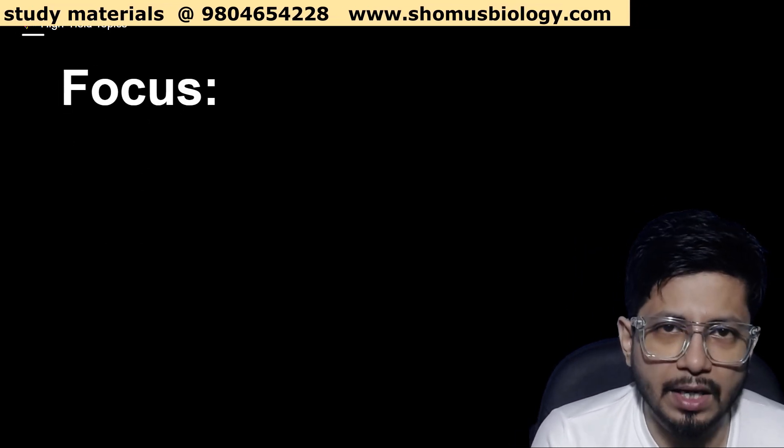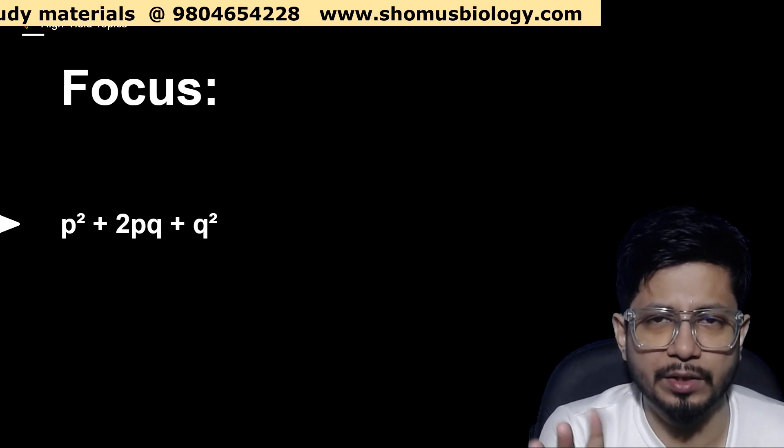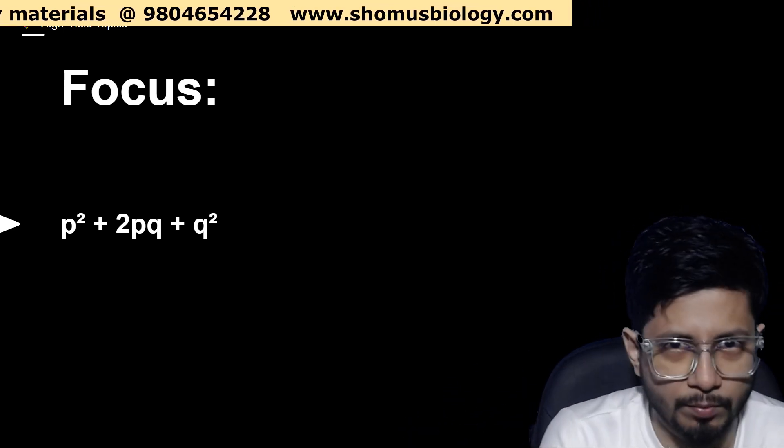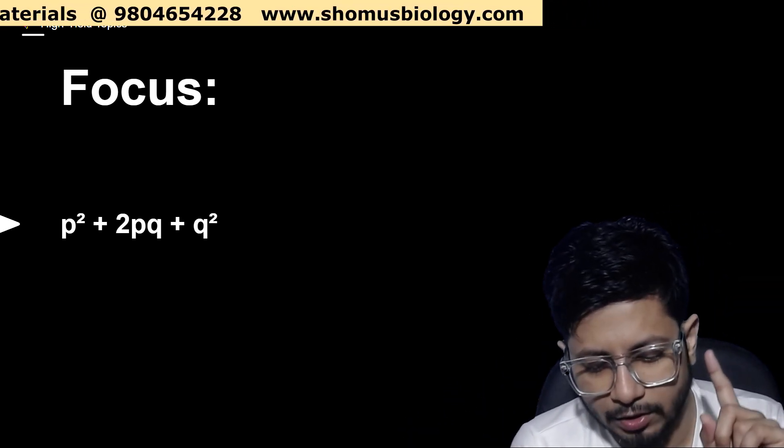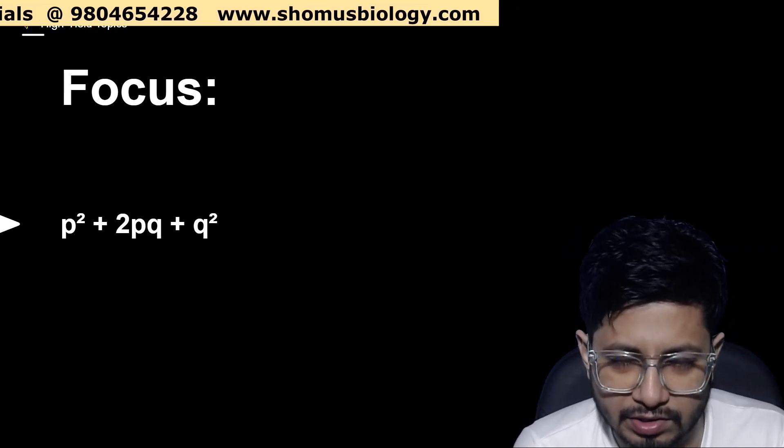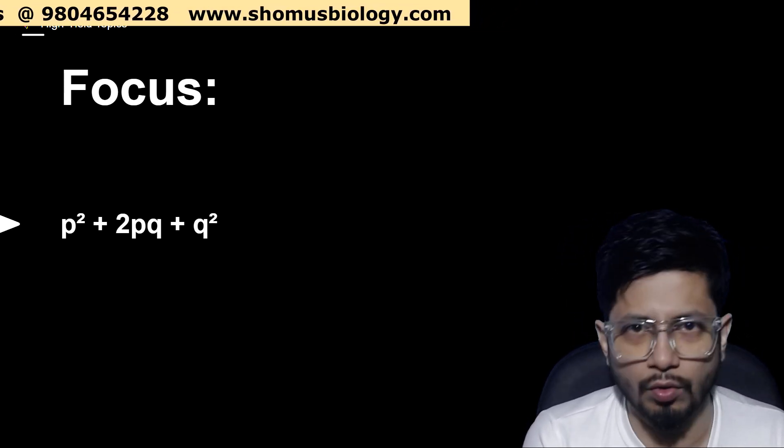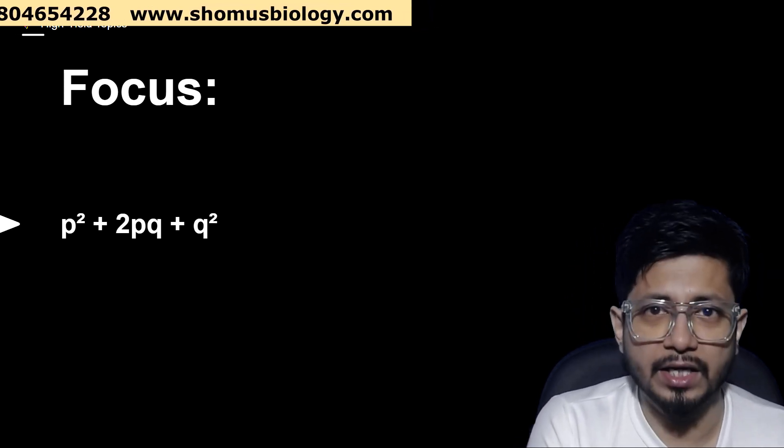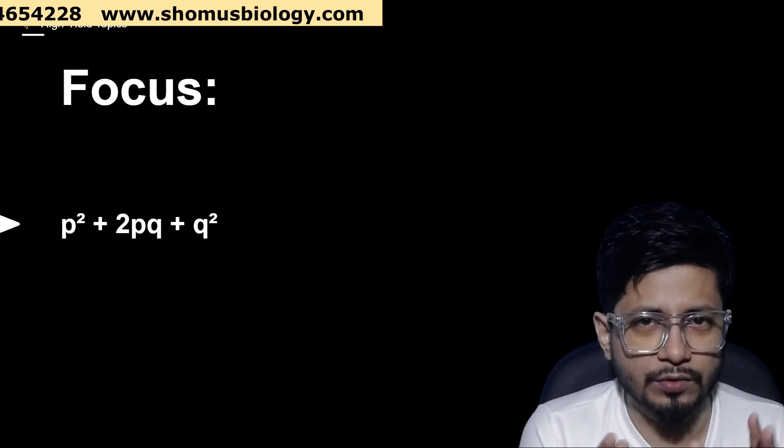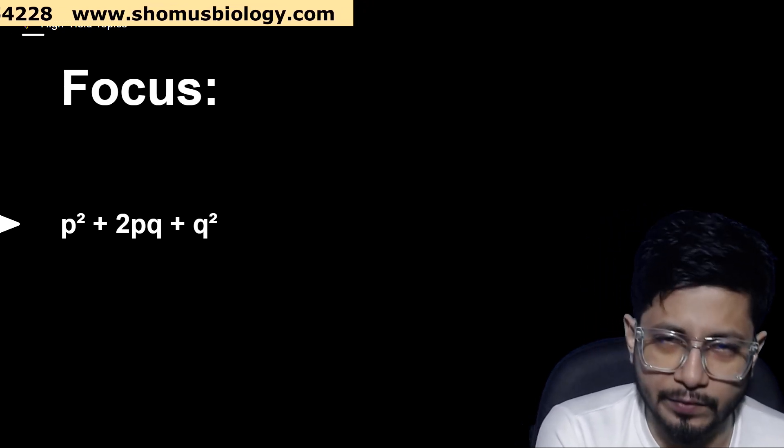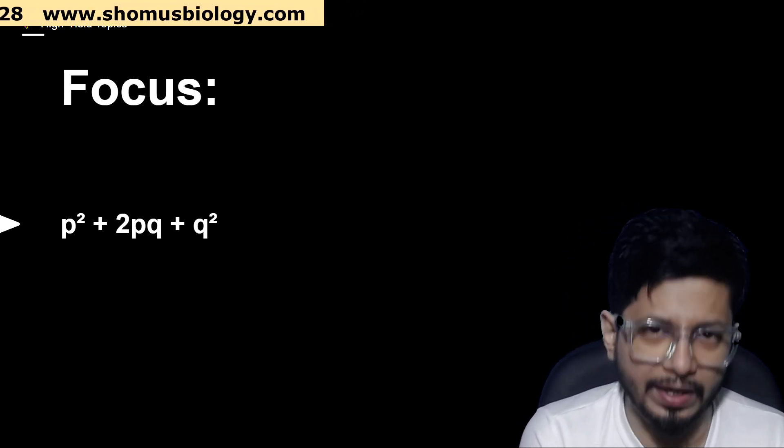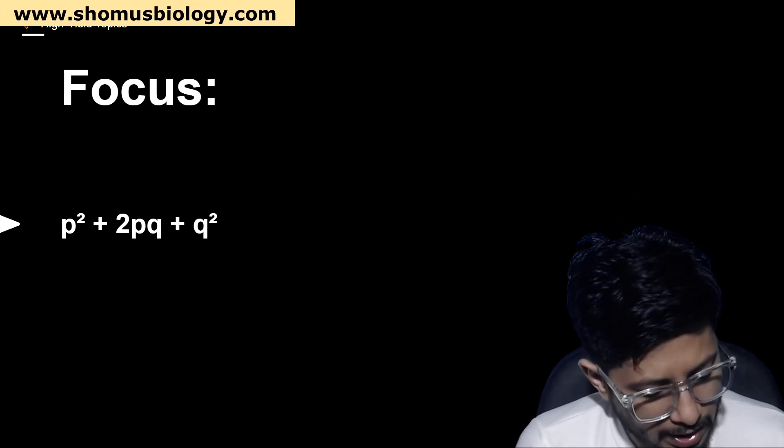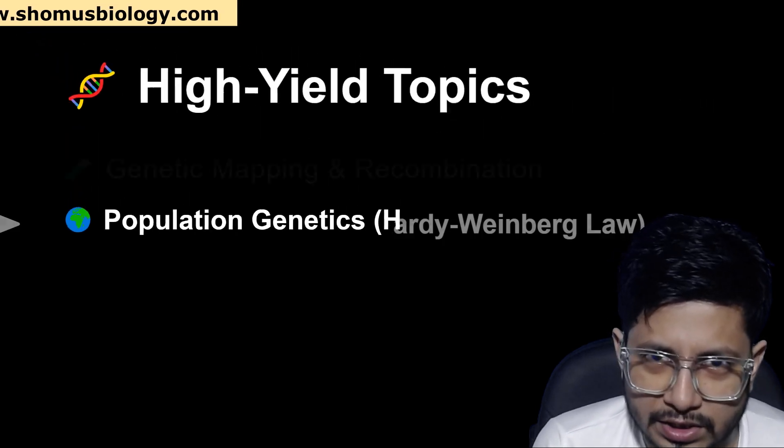Focus here would be the p squared plus 2pq plus q squared formula, the understanding of allele frequency, the understanding of gene frequencies, and also to count the overall population whether it is following the Hardy-Weinberg principle or not. To find out the value of one allele frequency knowing the other, or to find out the different genotype frequencies is something that we need to understand. That is the focus of population genetics.